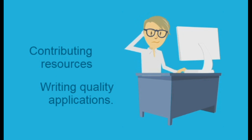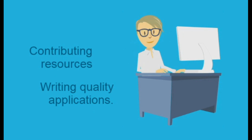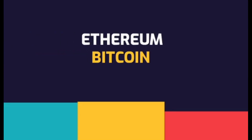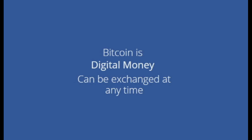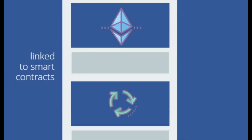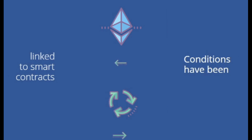What are the differences between Ethereum and Bitcoin? Ethereum is unlimited — the supply is continuous — while Bitcoins are limited to 21 million. Bitcoin is digital money that can be exchanged at any time; it's also a digital asset with a store of value that can be saved. Ethereum is different — its currency, Ether, is linked to smart contracts and can only be traded after a set of predetermined conditions have been met.